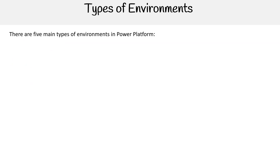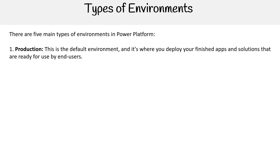There are five main types of environments in Power Platform. First, Production: this is the default environment and it's where you deploy your finished apps and solutions that are ready for use by end users.